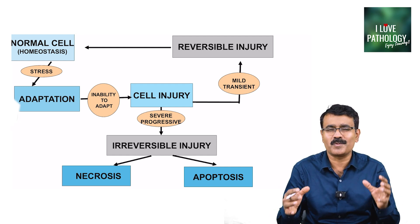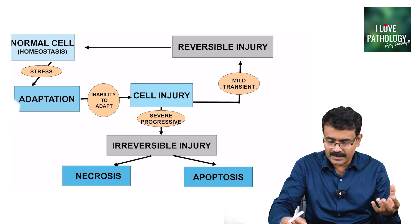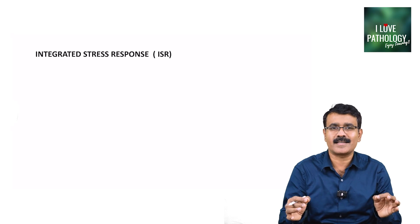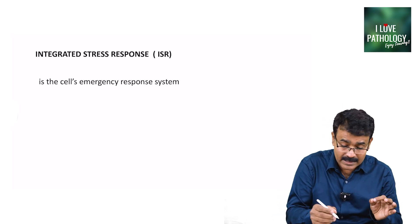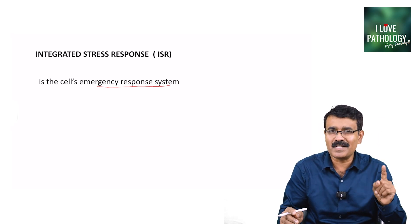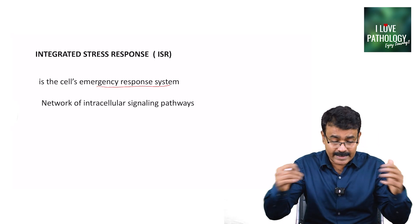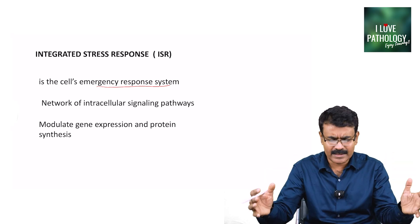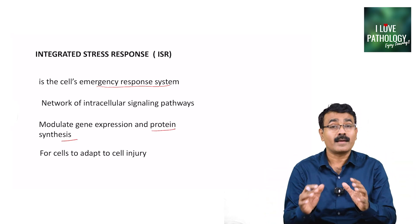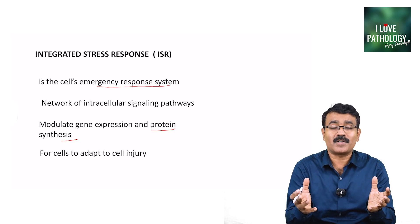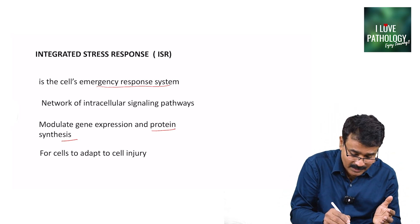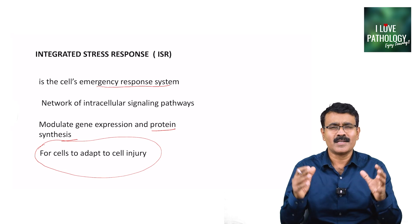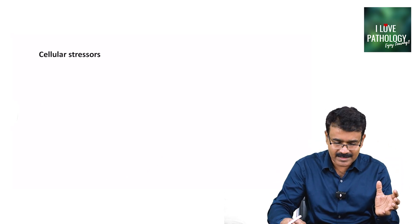Now let us see what really happens when cells are stressed — this is what we call integrated stress response. It is the cell's emergency response system: a network of intracellular signaling pathways which modulates the expression of various genes and protein synthesis. All these result in the genes and proteins needed for the cell to adapt to that particular stressful agent.